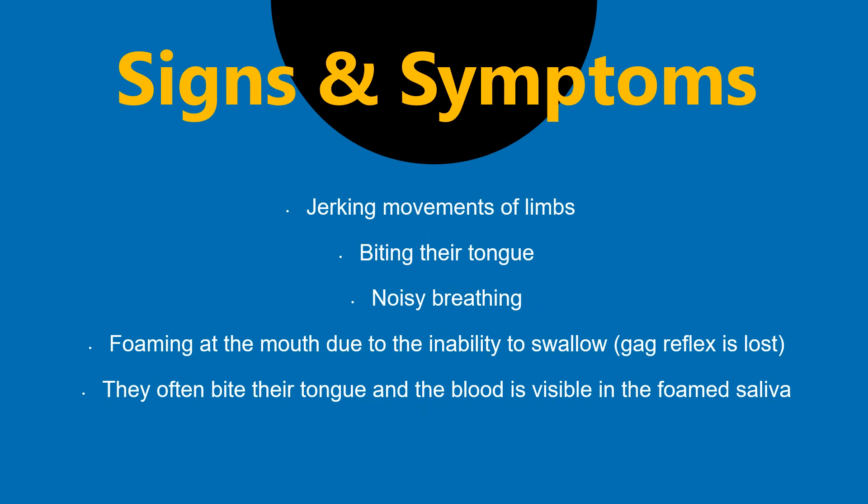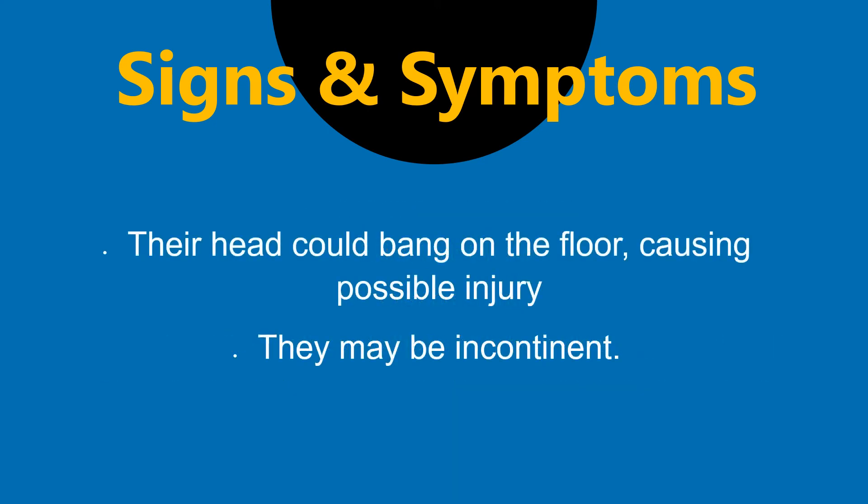Signs and symptoms of seizures include jerking movements of the limbs, as in the case of a grand mal seizure. They can bite their tongue, they can have noisy breathing, and they can be foaming at the mouth due to the inability to swallow, since the gag reflex is lost or impaired. They often bite their tongue and blood is visible in the foamed saliva. They could also bang their head on the floor causing injury to the body, and they may show signs of bladder incontinence.